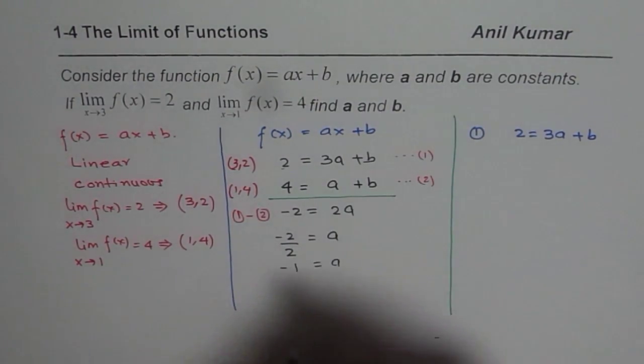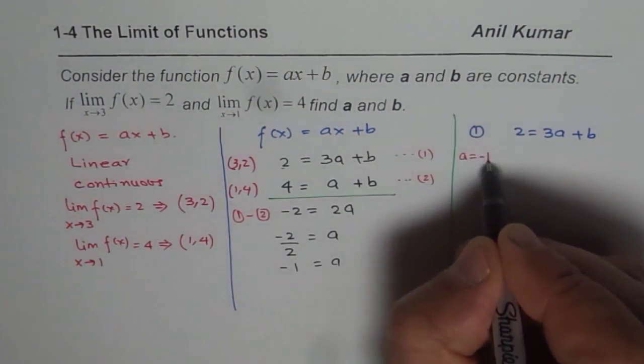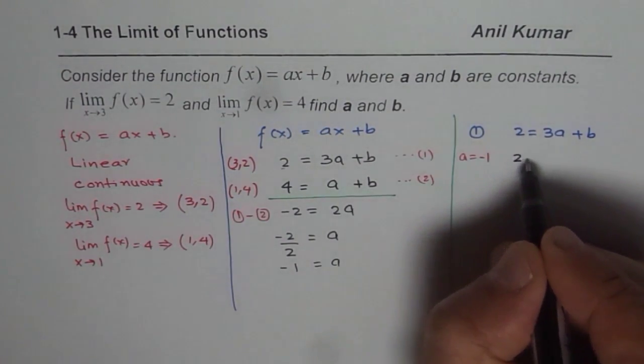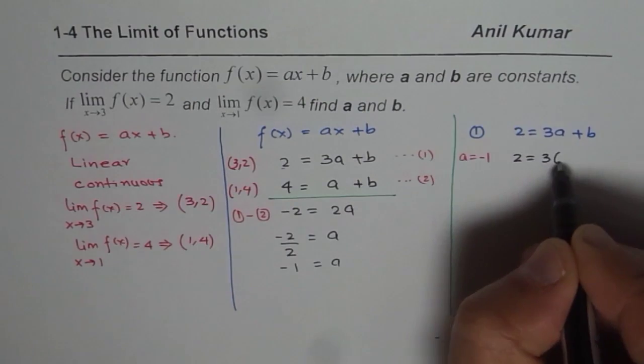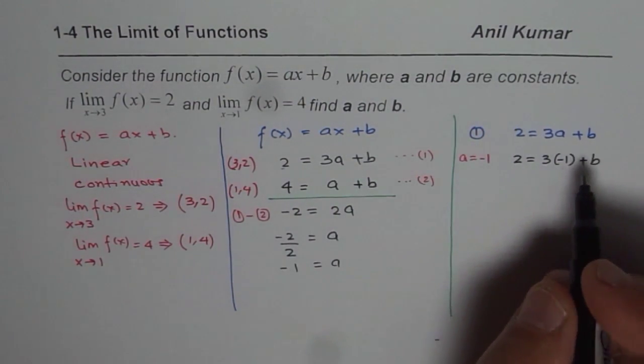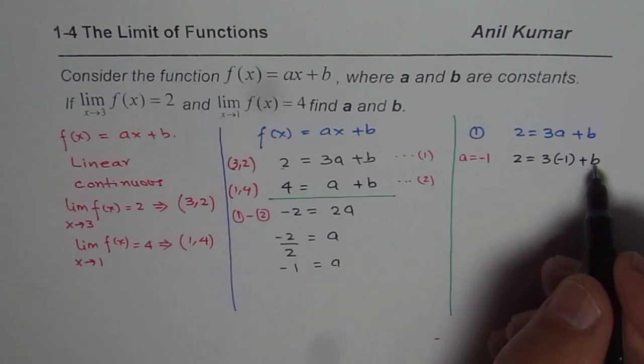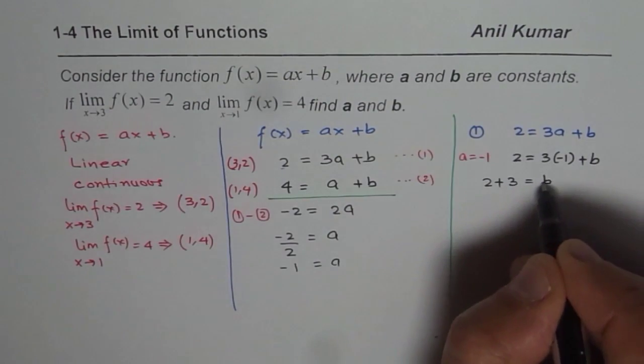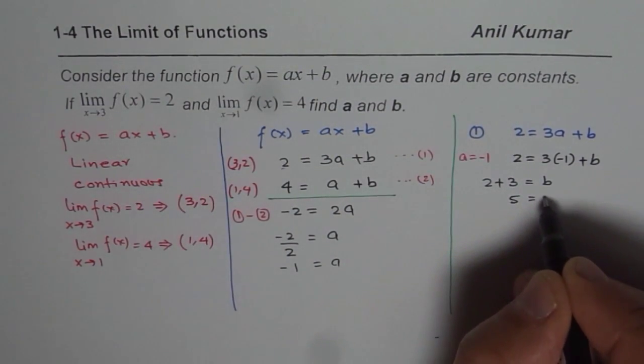So if I substitute minus 1 for a, I get 2 equals 3 times minus 1 plus b. So now we can write what b is, bringing 3 to this side, 2 plus 3 equals b or b equals 5.